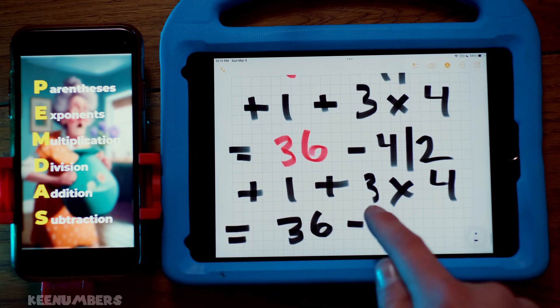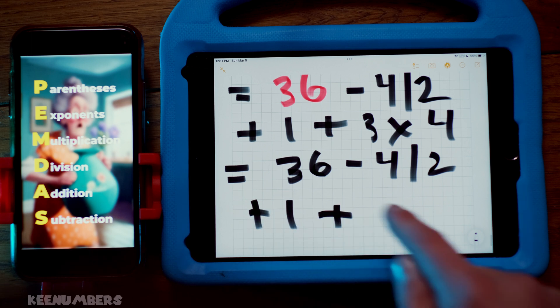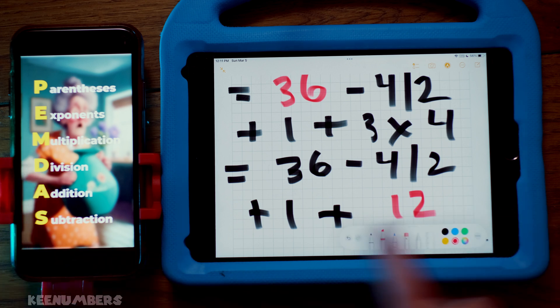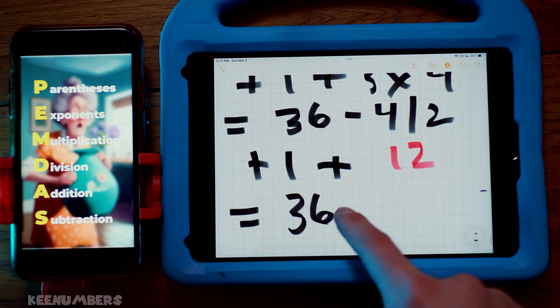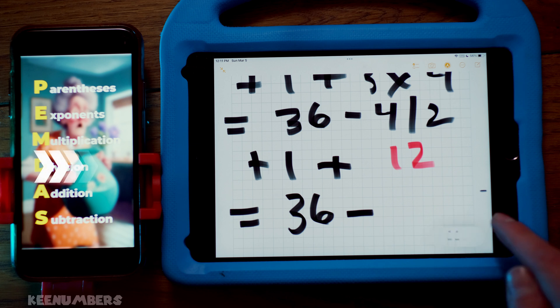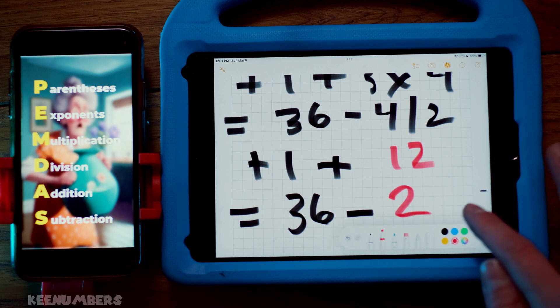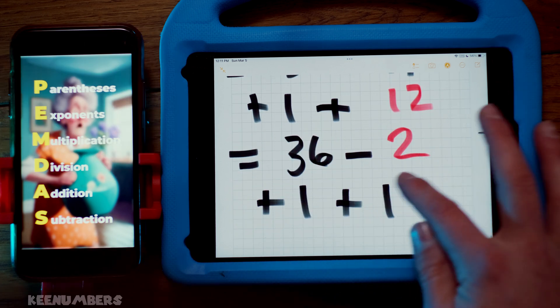So you've got 36 minus 4 divided by 2 plus 1 plus 12. Last but not least, you're going to do division, addition, and subtraction in that order. And so you're going to get 36 minus 4 divided by 2. Hey, you know the answer to that. 4 divided by 2, there are only 2 twos inside of 4. So we are winding down here. Home stretch.